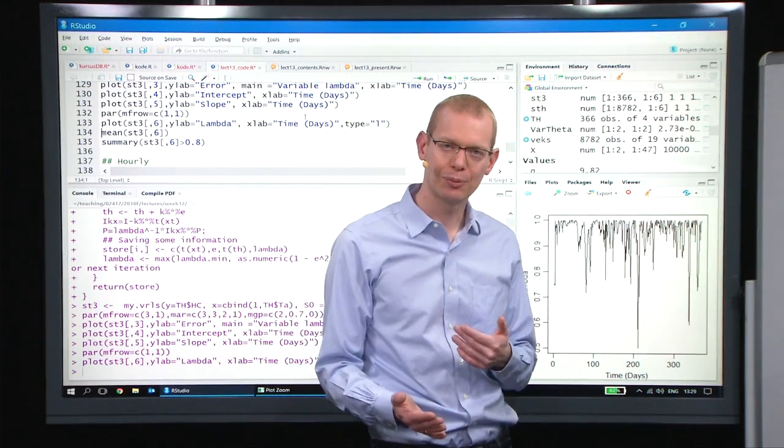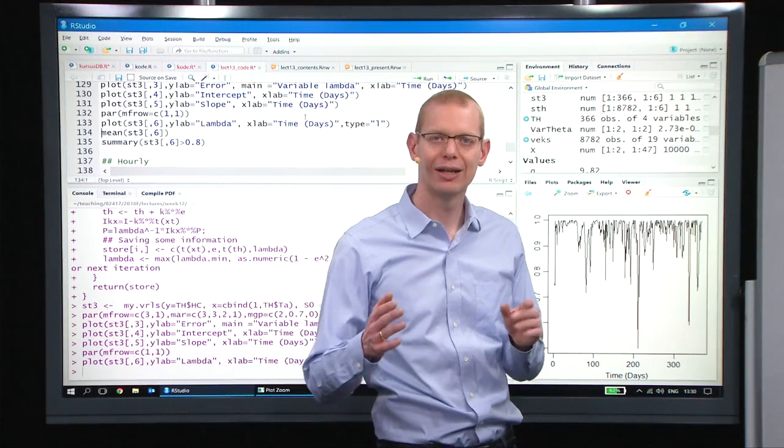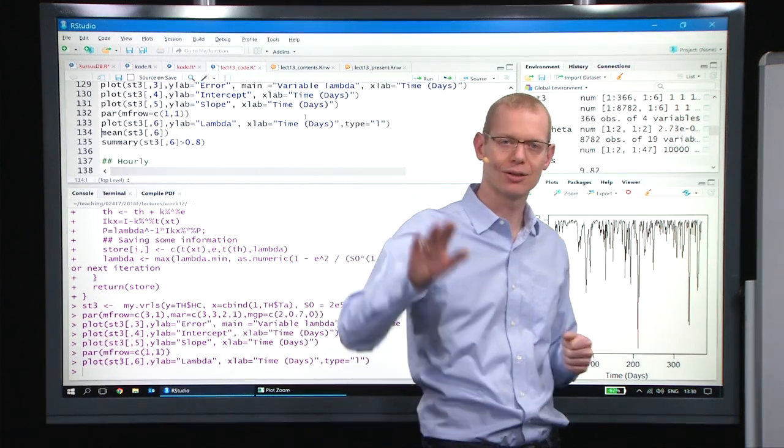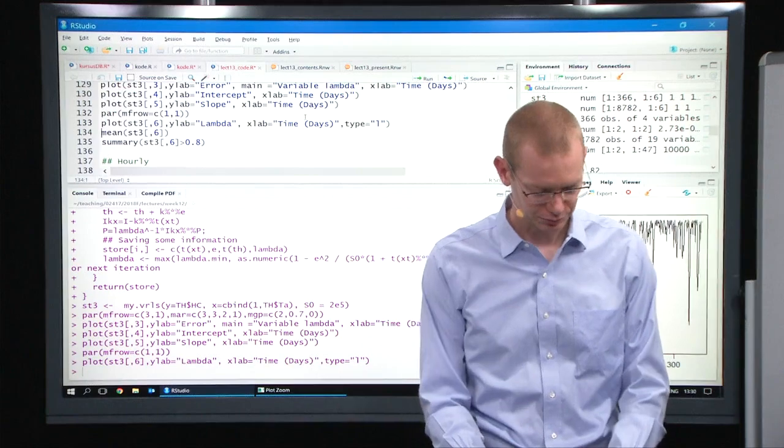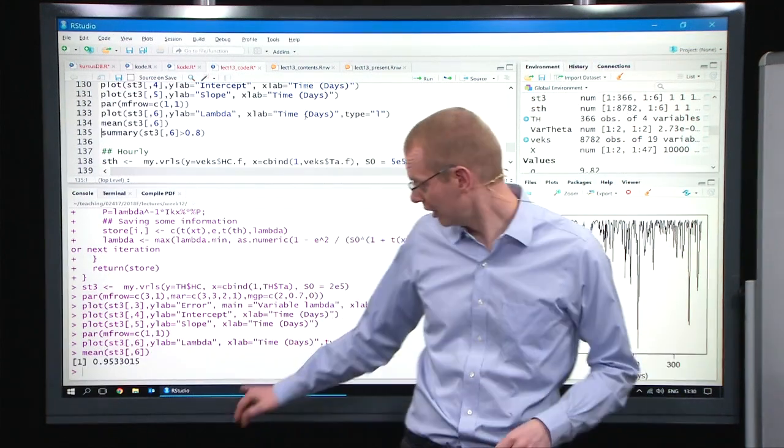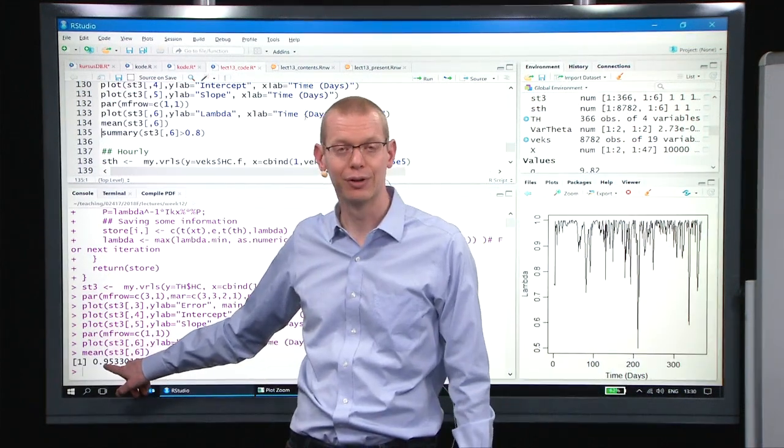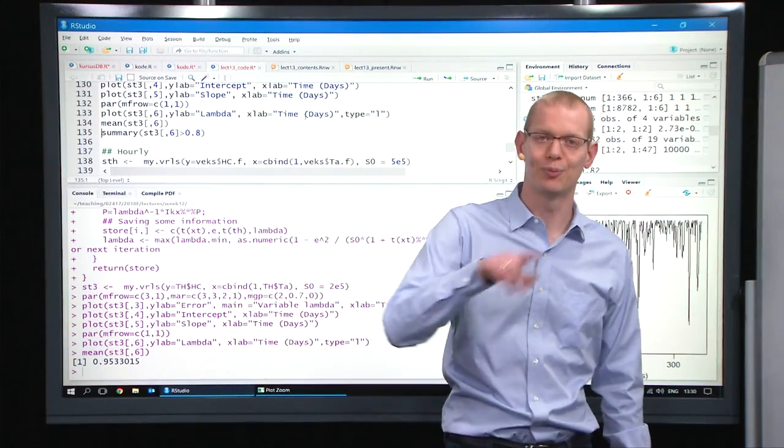So when it gets to that particular period where things are bad, it just forgets everything, and then it starts learning again. But if you look at the mean value of the lambdas, then we're up at 0.95,